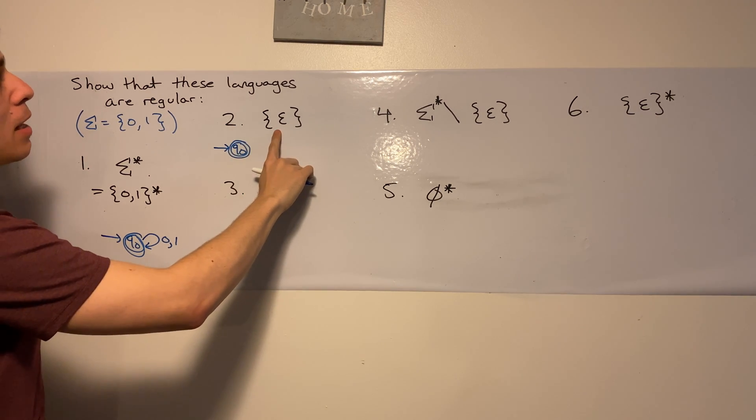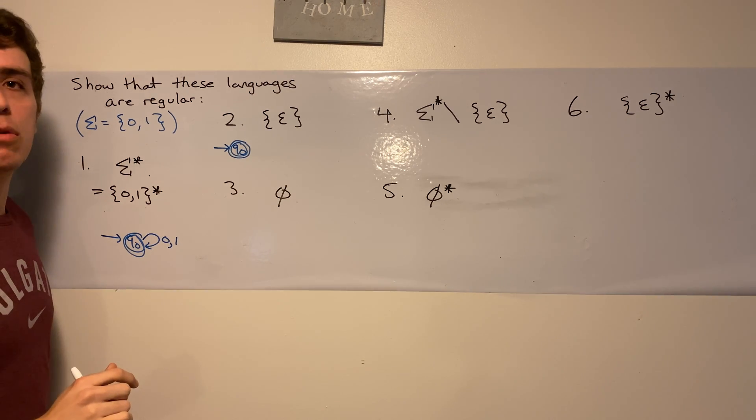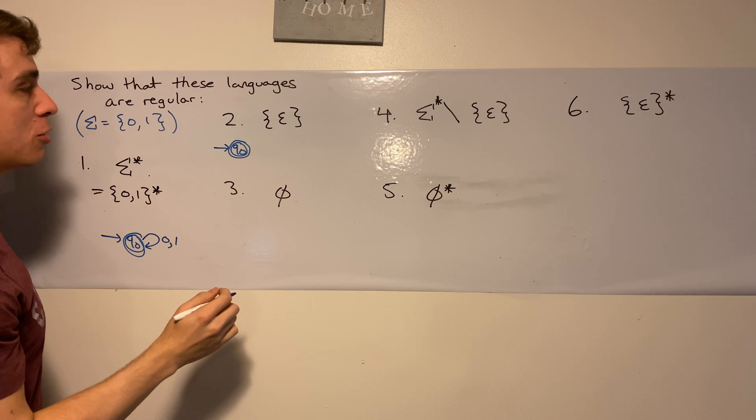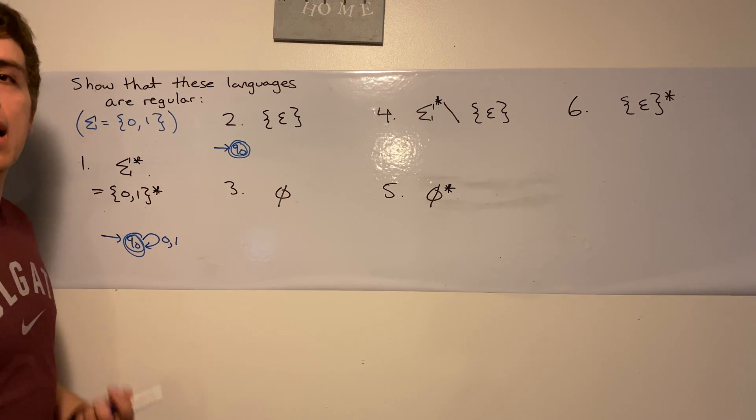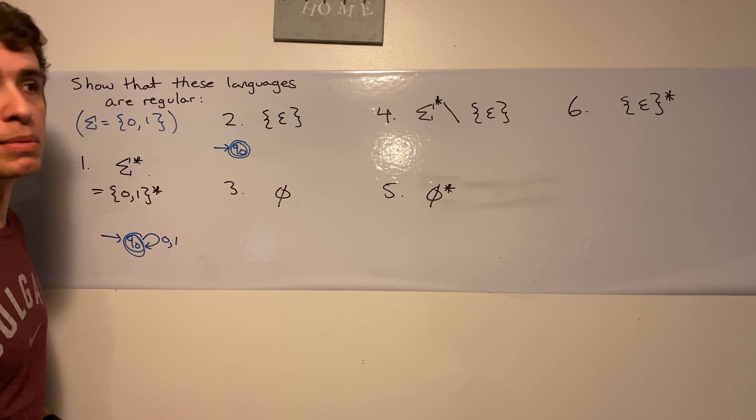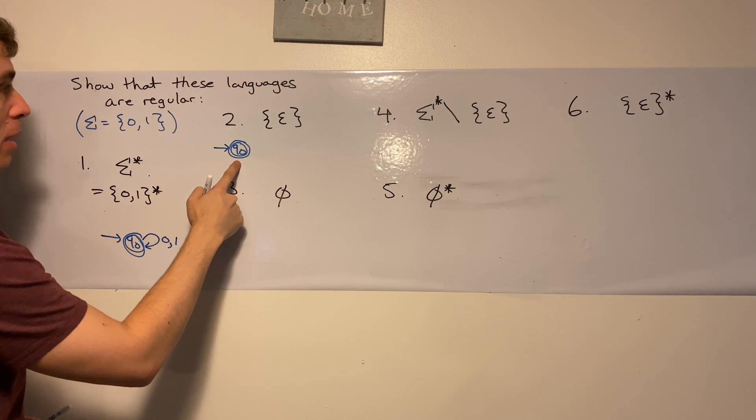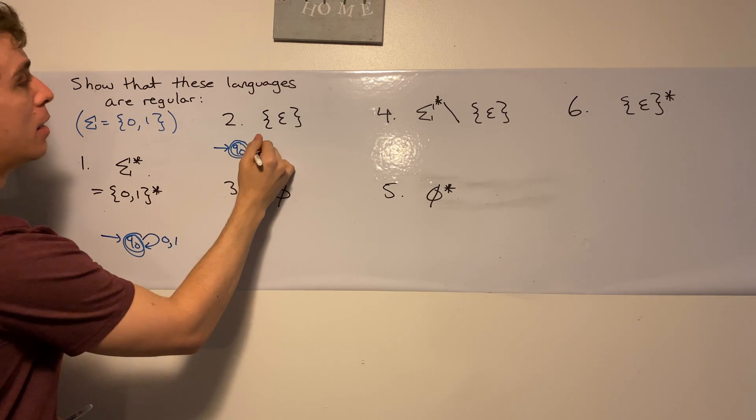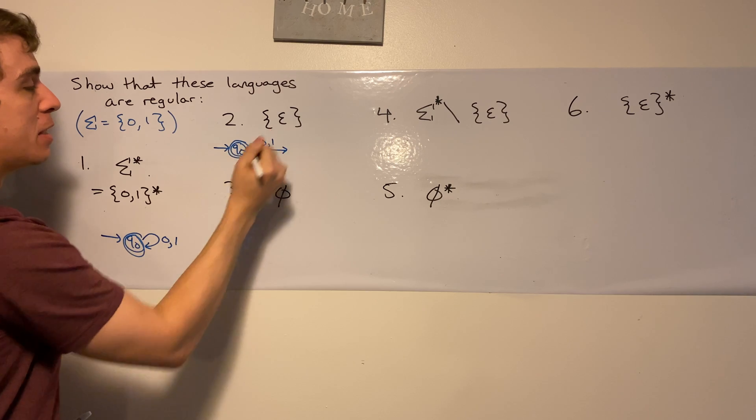But notice that there is no other string inside this language other than the empty string. So that means we can't accept any other string other than the empty string. So the transitions on zero and one can't stay here. They have to go to another state that is not accepting.